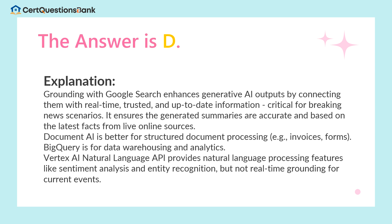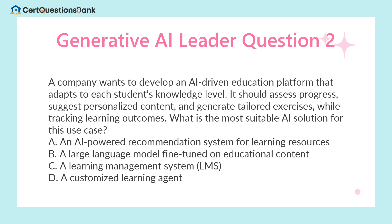The answer is D. Grounding with Google Search enhances generative AI outputs by connecting them with real-time, trusted, and up-to-date information, critical for breaking news scenarios. It ensures the generated summaries are accurate and based on the latest facts from live online sources. Document AI is better for structured document processing, e.g., invoices and forms. BigQuery is for data warehousing and analytics. Vertex AI Natural Language API provides natural language processing features like sentiment analysis and entity recognition, but not real-time grounding for current events.